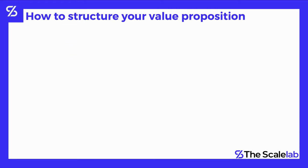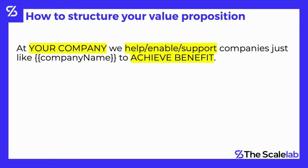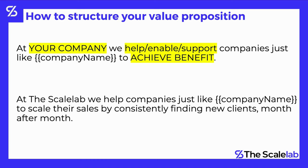Let me show you another way to structure your value proposition. The framework reads: 'At [Your Company], we help/enable/support companies just like [Company Name] to achieve [Benefit].' Here, the company name in brackets is the prospect's company name, and 'achieve benefit' relates to your value proposition — the ultimate outcome your prospects are looking to achieve. A real example for the Scale Lab: 'At the Scale Lab, we help companies just like [Company Name] to scale their sales by consistently finding new clients month after month.' We understand they need to find clients week after week, month after month, to have a sustainable pipeline.